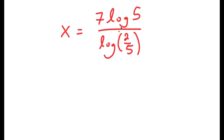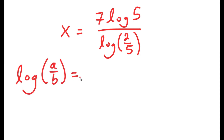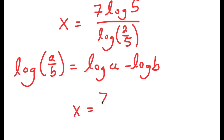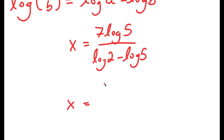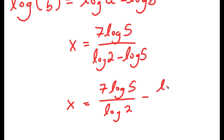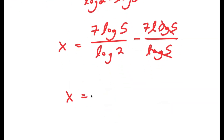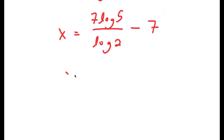We have our answer, but there is a way to simplify it more. Using the property that log of a over b equals log a minus log b, log of 2 over 5 equals log 2 minus log 5. Substituting and simplifying, log 5 terms cancel in the numerator and denominator, giving 7 times log 5 over log 2 minus 7 times log 5 over log 5. This simplifies to 7 times log base 2 of 5 minus 7.